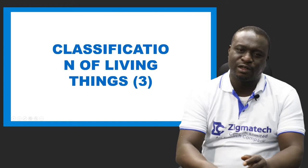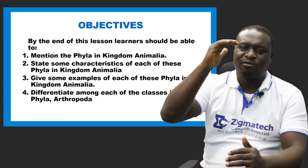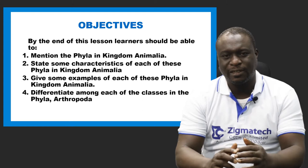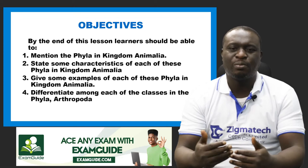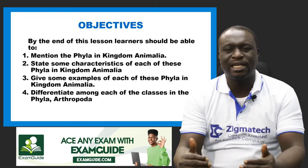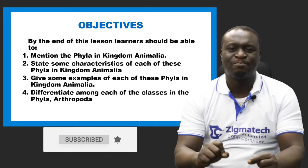These are some of the things you should take note of. By the end of this lesson, learners should be able to mention the phyla in kingdom Animalia. Remember, we talked about kingdom, phyla, class, order, family, genus, and then species. The kingdom is split into smaller units which contain a larger number of organisms, called phyla. The second objective is that you should be able to state some of the characteristics of each of these phyla in kingdom Animalia.